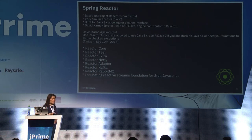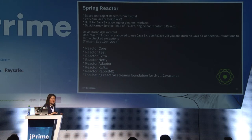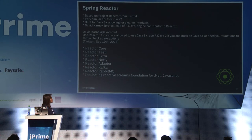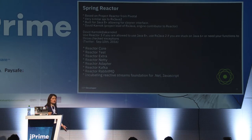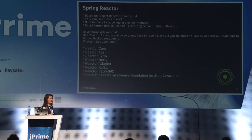Spring Reactor is based on Project Reactor from Pivotal and has a very similar API to RxJava. It started after Java 8, so it has a cleaner interface. David Karnok, Project Lead of RxJava, also contributed to Reactor. He says: use Reactor 3 if you're allowed to use Java 8 or higher, and use RxJava 2 if you're stuck on Java 6 or if you need functions to throw checked exceptions. Reactor libraries include Reactor Core, Reactor Test, and extras with NETI and Adapter, integrating well with Kafka and RabbitMQ.